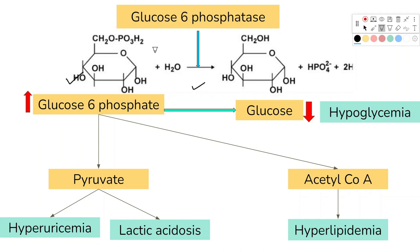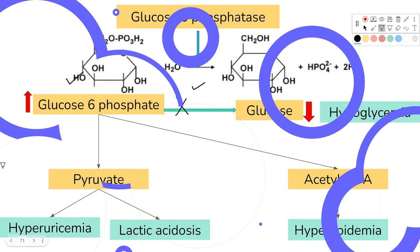This results from mutation in the G6PC gene on chromosome 17q21. The structure of glycogen will not change, but it will increase in amount and get deposited in various organs. In the absence of this conversion, there will be reduced blood sugar, which will lead to recurrent attacks of refractory hypoglycemia.